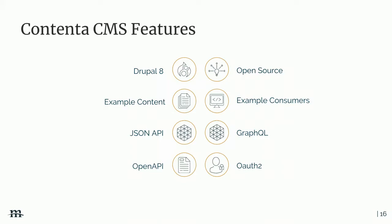JSON API is one I'm more familiar with. If you set up your Contenta project, there are sections with links to videos on getting more familiar with JSON API and how to use it to fetch data from the site. Pretty much everything you can do with EntityFieldQuery in Drupal you can do with JSON API — all your filtering by title, fields, and so on. That's really powerful for getting the content you need from an external system without needing custom code on the Drupal side.